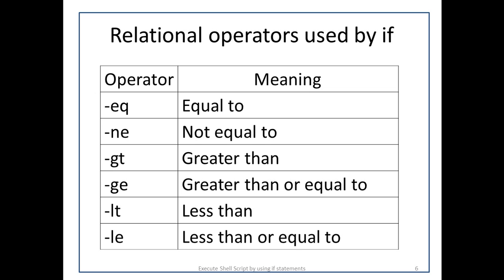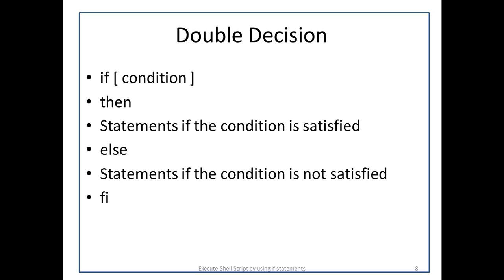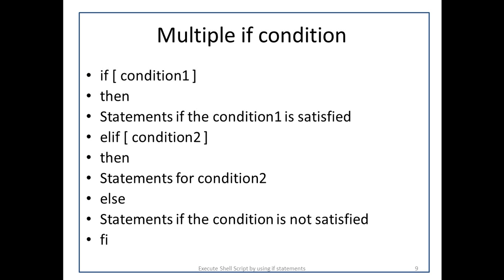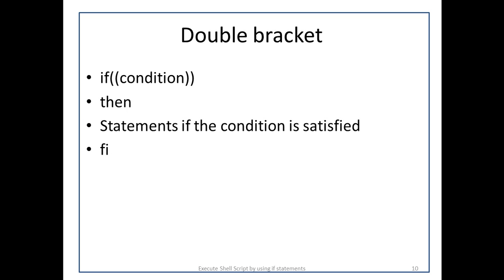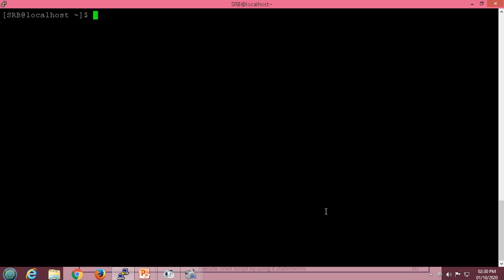This is the syntax for a single decision statement, the syntax for a double decision, and the syntax for multiple if conditions. Here the elif block is used to specify multiple conditions. And this is the double bracket — instead of using the square bracket, we can use double rounded brackets.